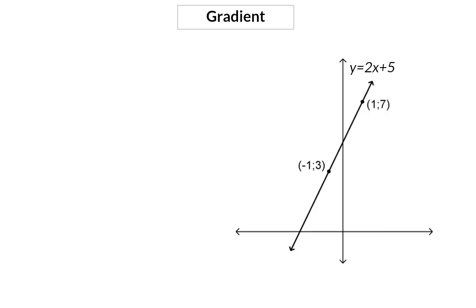Here we have the sketch of the straight line y is equal to 2x plus 5. A straight line has a constant gradient and that gradient can be seen in the equation by looking at the coefficient of x. So in our example the gradient is 2.